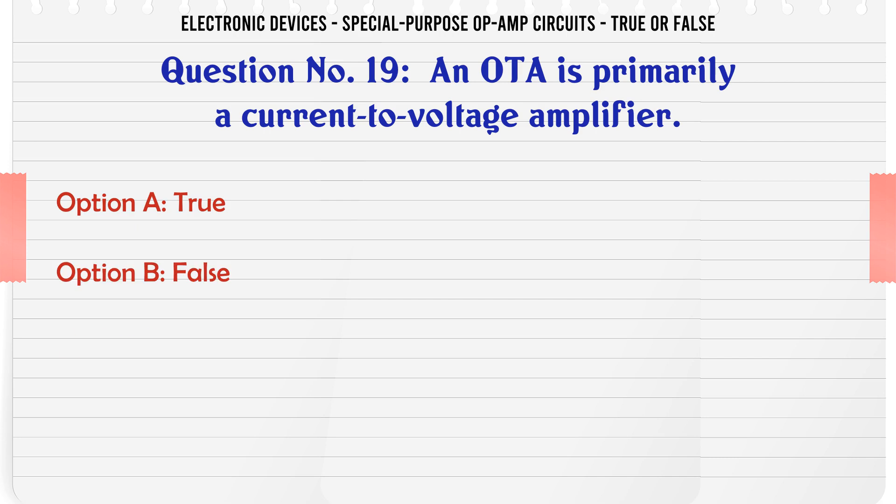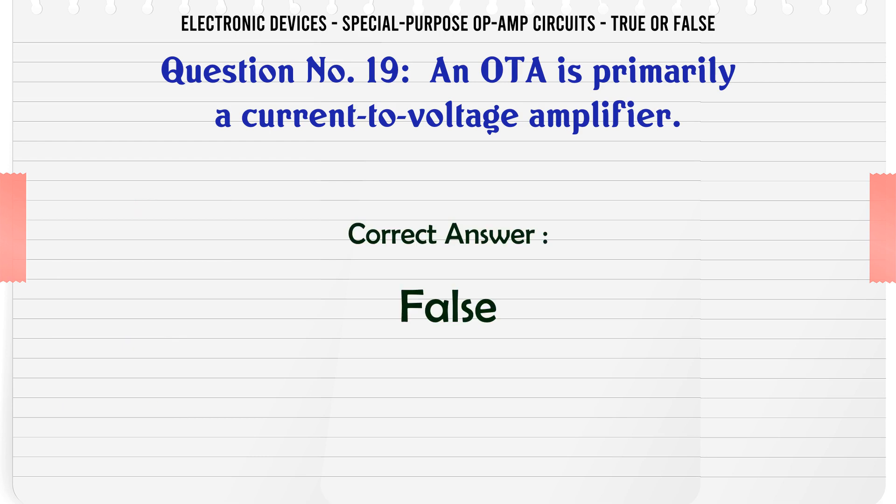An OTA is primarily a current to voltage amplifier. A. True. B. False. C. D. The correct answer is False.